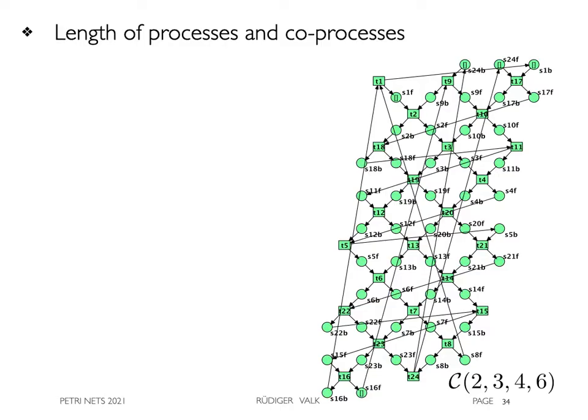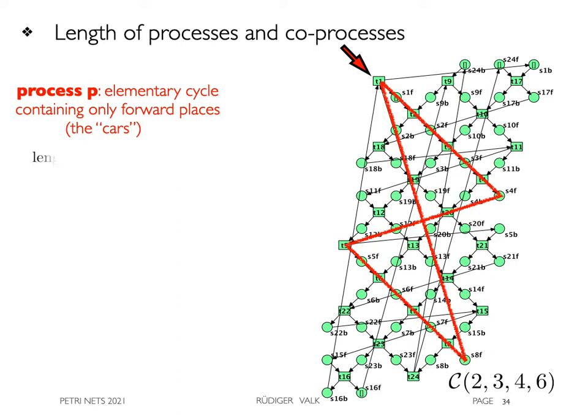To be used in the next section, we now derive the lengths of processes and co-processes. A process is an elementary cycle containing only forward places, modeling the cars. The length is 8 transitions in this example.